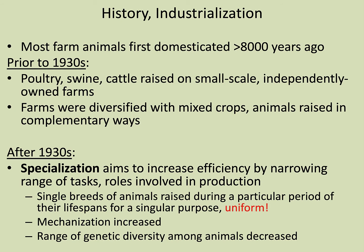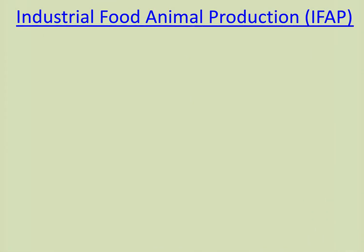Instead of having multiple breeds of animals, farms would have just one species, and even just one breed within that species. That makes things more uniform — much of what we eat today is always consistent-looking, whereas in nature it's always a little different. Breeders used one breed because everything was the same shape and size, making it easier for equipment to harvest. Genetic diversity decreased as we became more specialized and industrialized.